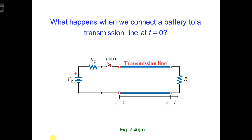Let's start by considering the simplest scenario where we have a constant voltage source, a battery, with an internal resistance Rg, connected at time t equals zero to the transmission line, meaning the switch closes at time t equals zero. The other end of the transmission line is connected to the load, Rl. What happens when the switch closes?